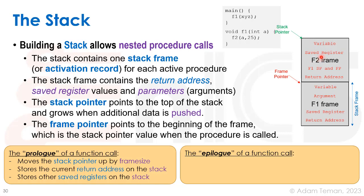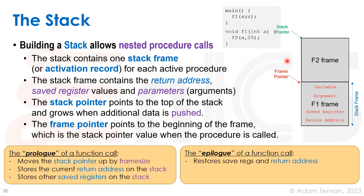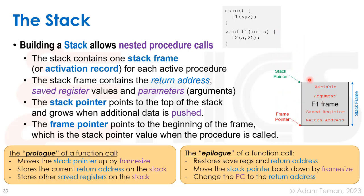We then run f2 and may use this frame to store all kinds of variables. Once finished, we return from f2 and want to reclaim that memory and replenish the saved registers. The epilogue restores the saved registers and return address so we can return to the state we were in inside f1. We then move the stack pointer and frame pointer back down, which effectively releases the memory — not by erasing it, but by moving the stack pointer down so it no longer exists. Finally, we change the program counter to the return address incremented by one and continue running.